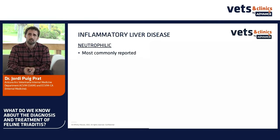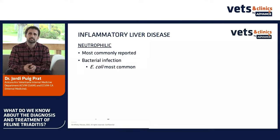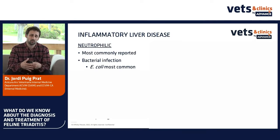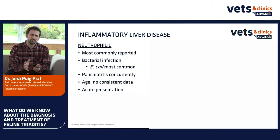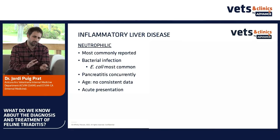The neutrophilic form is the most commonly reported in the veterinary literature. We can usually isolate bacteria because there is data proving this is an infection happening in the liver. However, most of the time we have concurrent pancreatitis. Regarding age, there is no consistent data showing whether younger or more adult cats are affected.